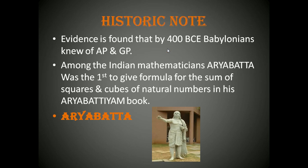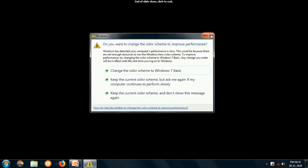There is evidence that by 400 BCE, Babylonians knew about Arithmetic Progression and Geometric Progression. They might not have known the terms we use today, but they knew how to calculate them. Among Indian mathematicians, Aryabhatta was the first person who gave the formula for the sum of squares and cubes of natural numbers in his book — you can see his picture in your 10th class Mathematics textbook. Thank you for watching, children.